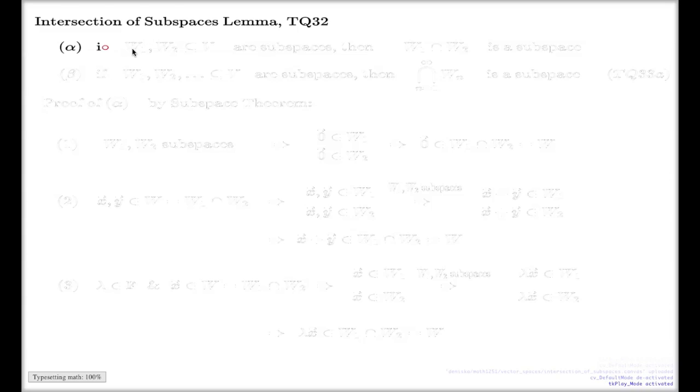So look what part alpha says. It says if you have two subspaces in a vector space, if you're given something like this, then if you build intersection of these two subspaces as sets, if you take the common part in these two, this will be a subspace again.